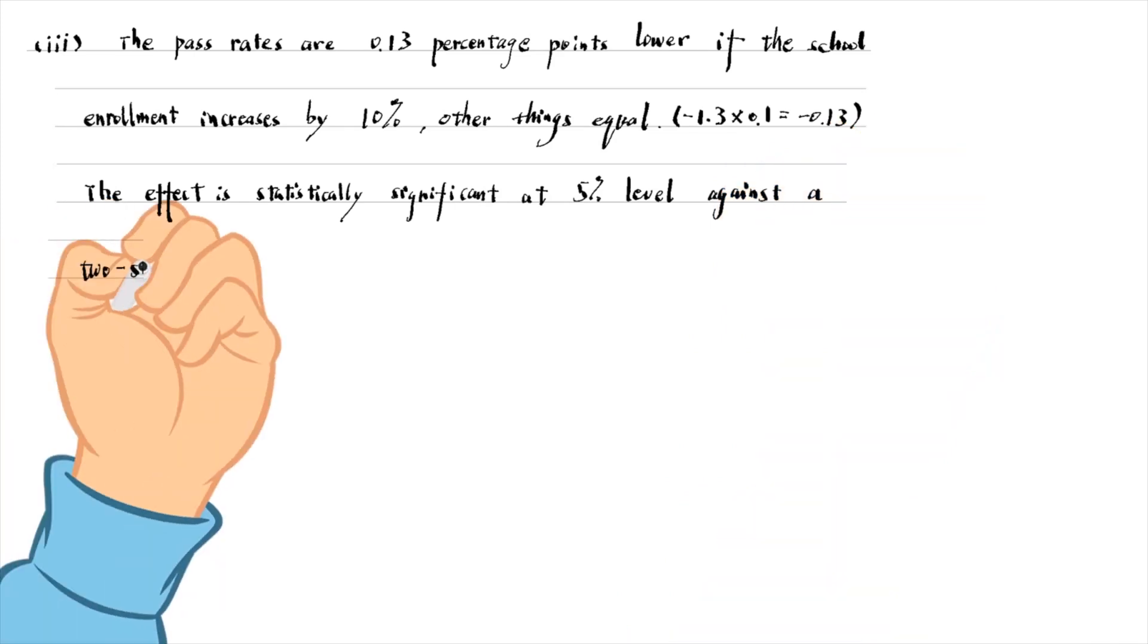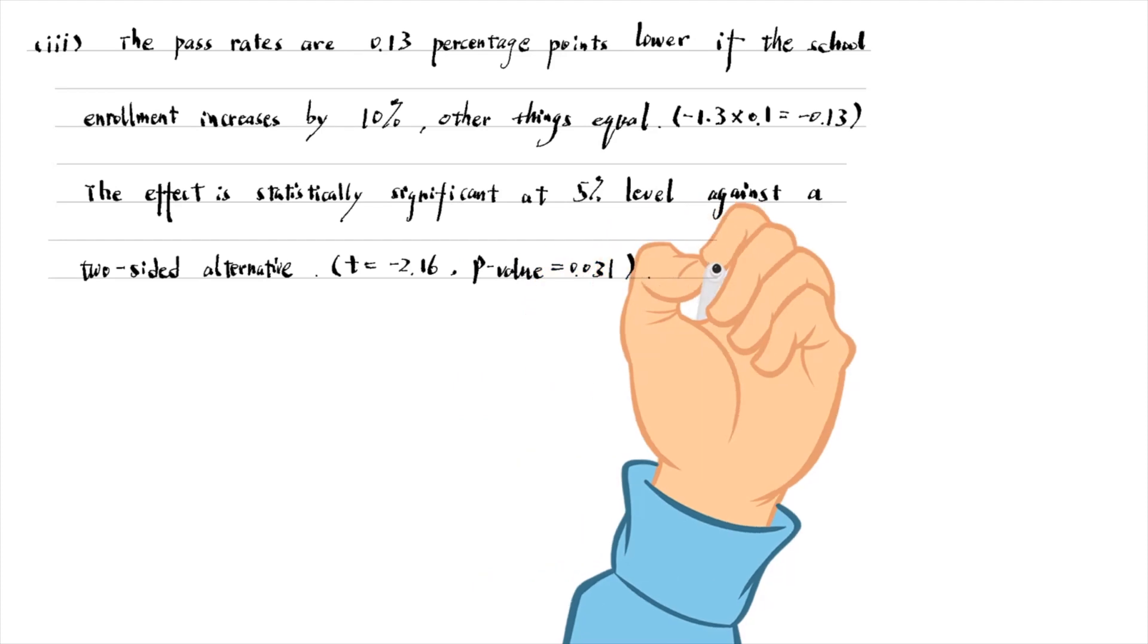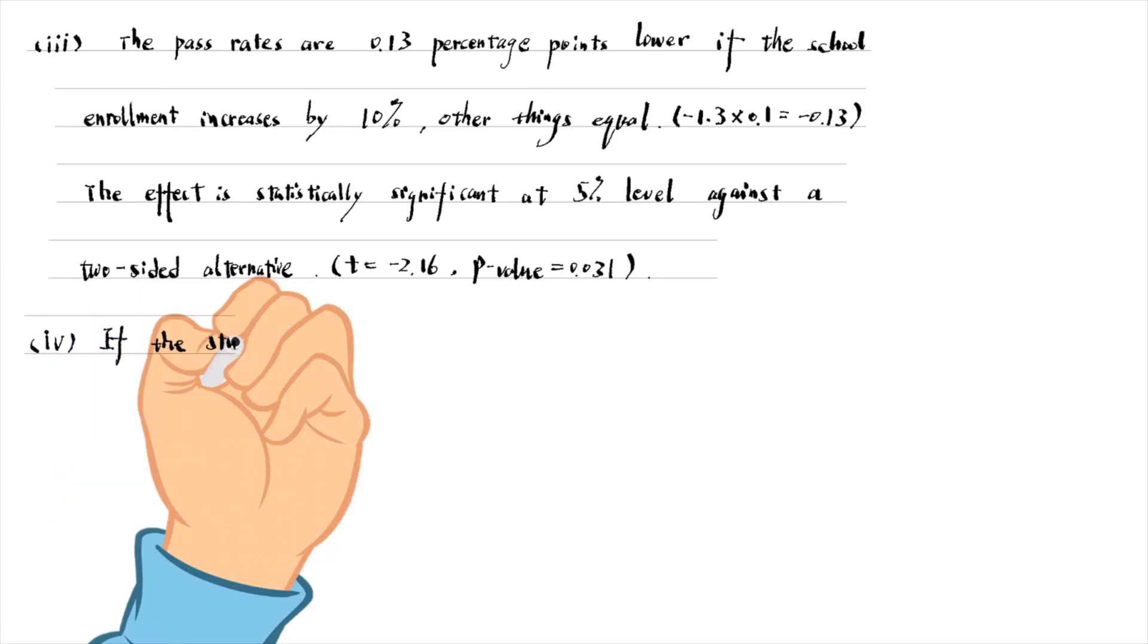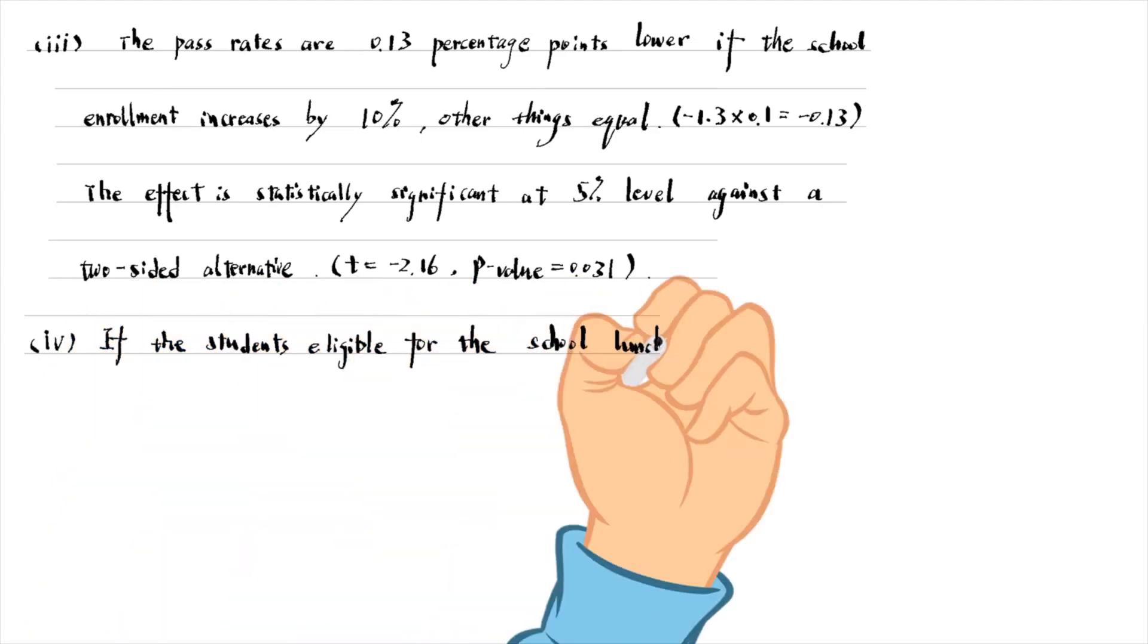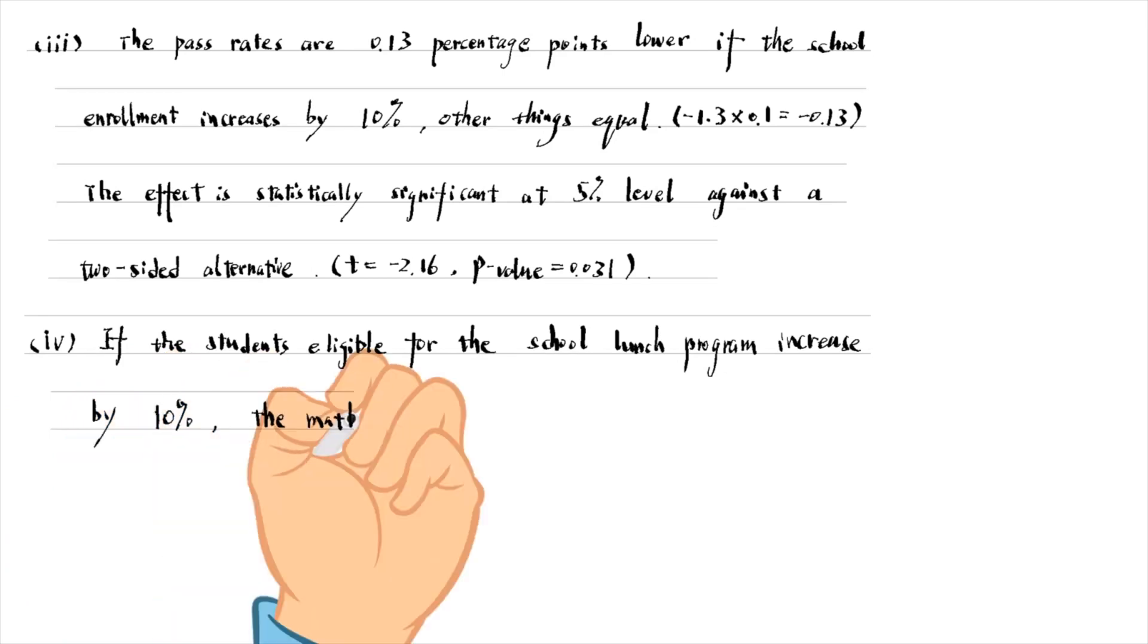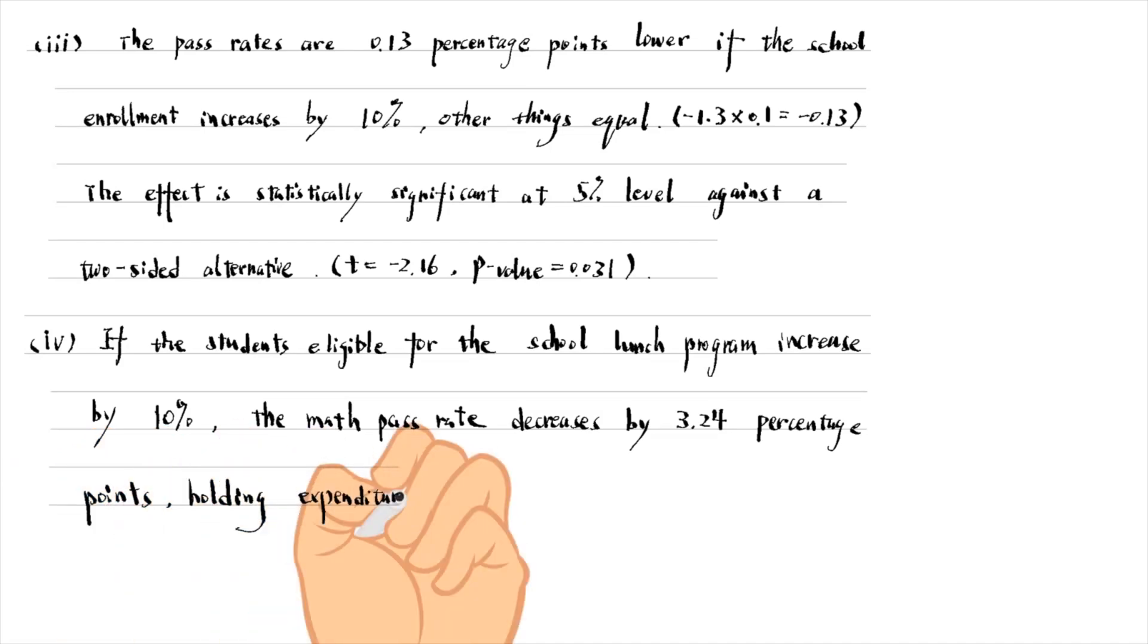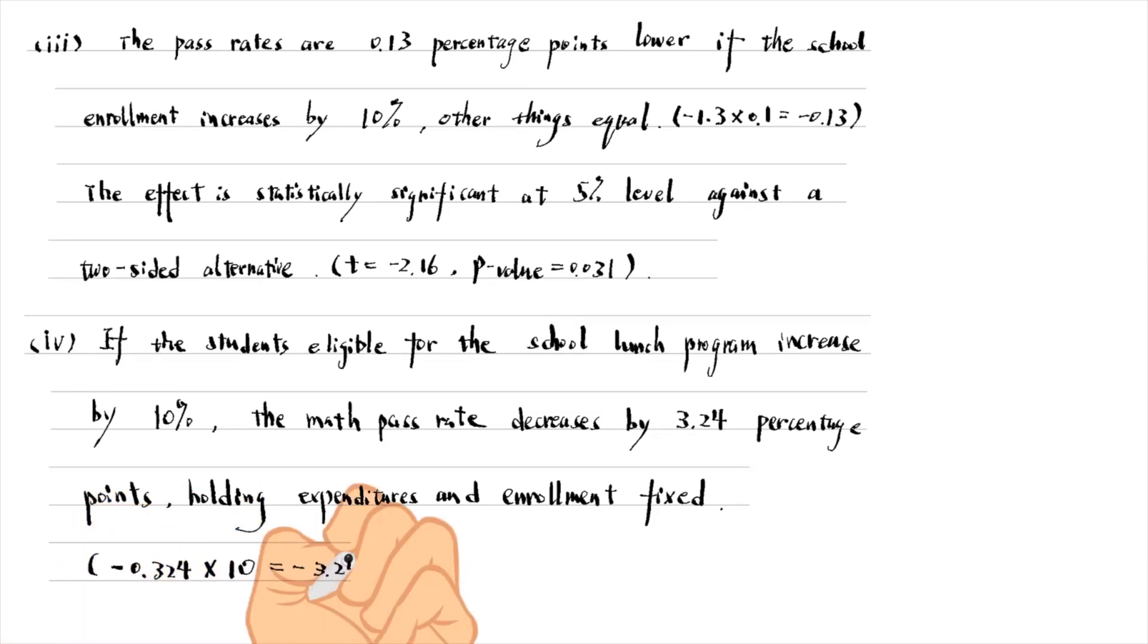For part 4, if the students eligible for the school lunch program increase by 10%, the math pass rate decreases by 3.24 percentage points, holding expenditures and enrollment fixed. The effect is statistically significant at the 1% level.